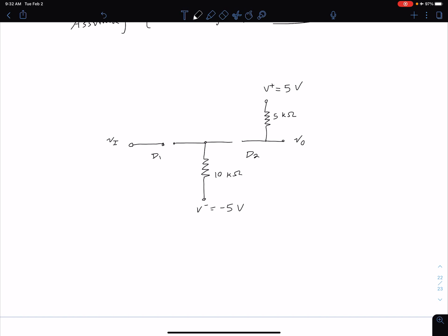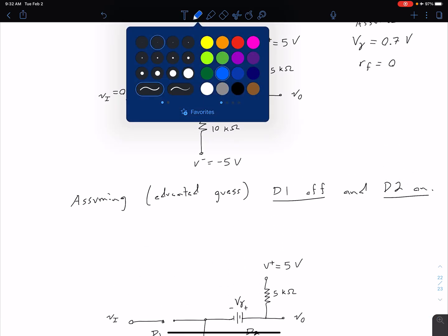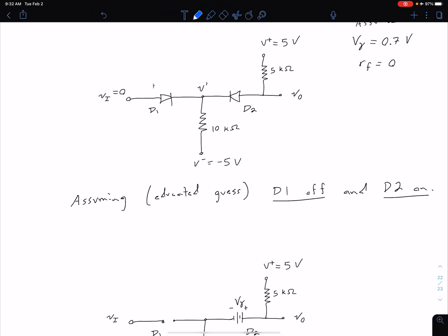And because our D2 is on we're going to replace that with a voltage source. And so our voltage source is going to be positive on this side and negative on this side and that value is going to be V_gamma. And so one thing I didn't do here that we can do that might be helpful is we can define some voltages and currents.